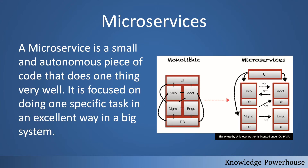These days microservices architecture is quite popular. Prior to microservices, we had monolithic architecture — a monolith is like one big giant piece of codebase that has all kinds of features and services within itself. But in microservices, we have a small and autonomous piece of code that does only one thing very well.